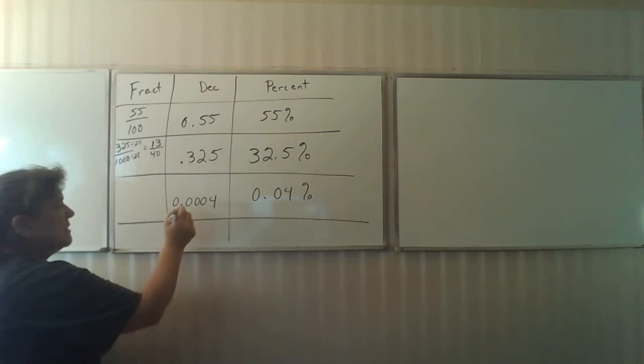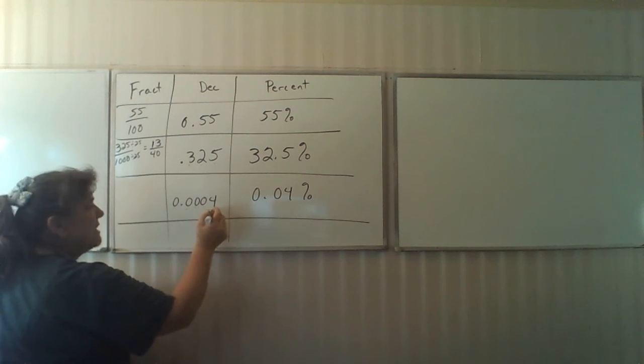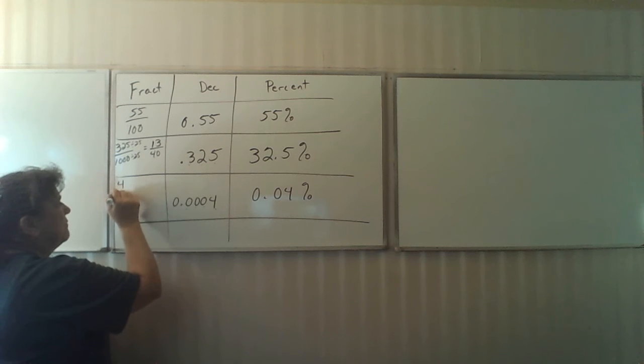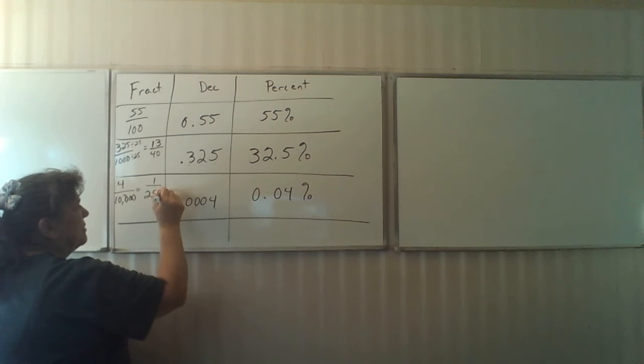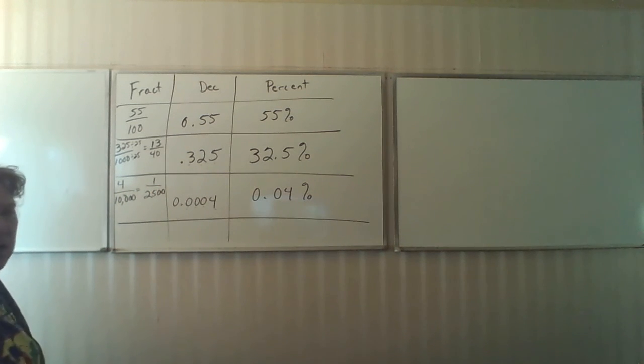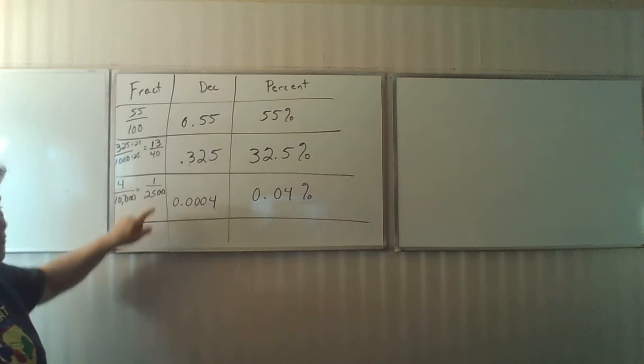And now, this is tens, hundreds, thousands, ten thousands. So this is 4 over ten thousands. And 4 divided by 4 is 1. 4 goes into ten thousands, two times, carried by 2, 5, 0, 0. So this is 1/2500 for your fraction.